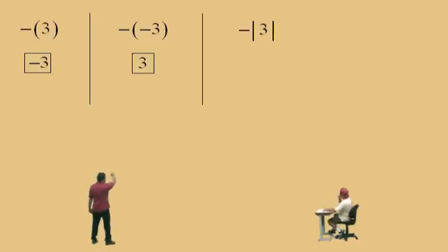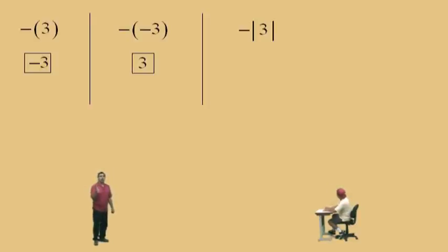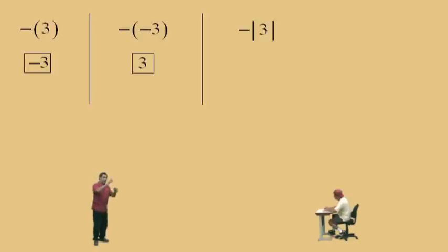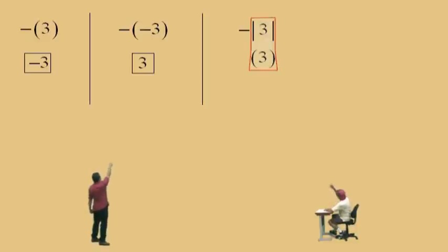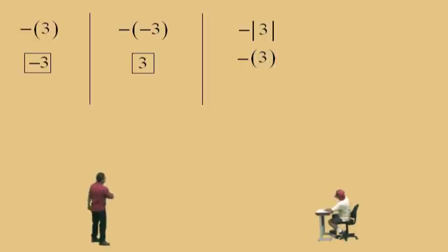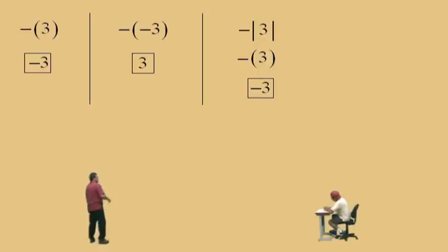Now be careful with this one. This is the opposite of the absolute value of 3. The first thing you have to do is evaluate the absolute value. Remember, order of operations — parentheses, exponents, multiplication and division, then addition and subtraction — never mentioned absolute values. So what is the absolute value of 3, Charlie? 3. Notice we've evaluated the absolute value of 3. Don't forget the opposite sign — bring that down. Now the question becomes: what is the opposite of 3? It is negative 3.